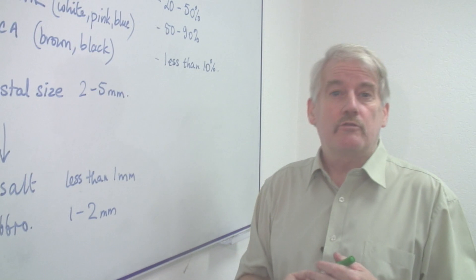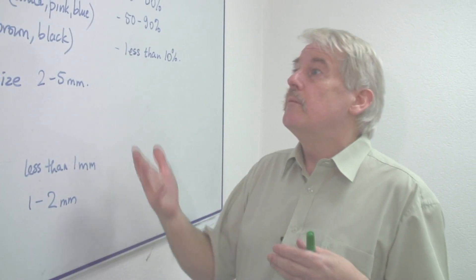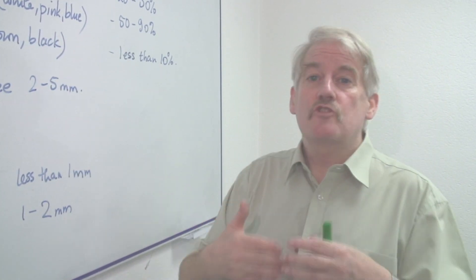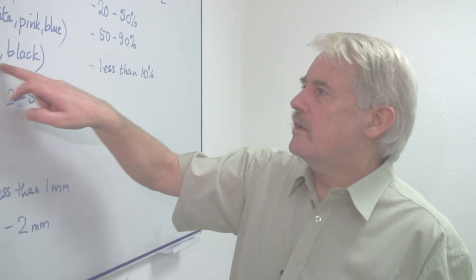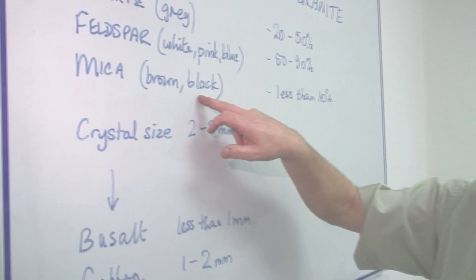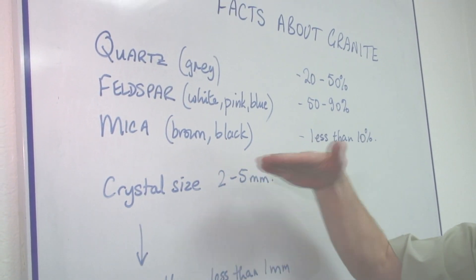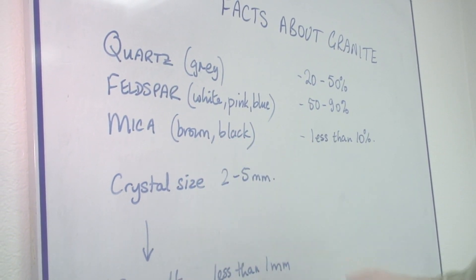And the blue granite, which is quite unusual, is really bright blue, but contains also the grey and the black of the quartz and the mica. The mica, although we say it's brown or black, when it's in the granite it looks very dark, almost black.